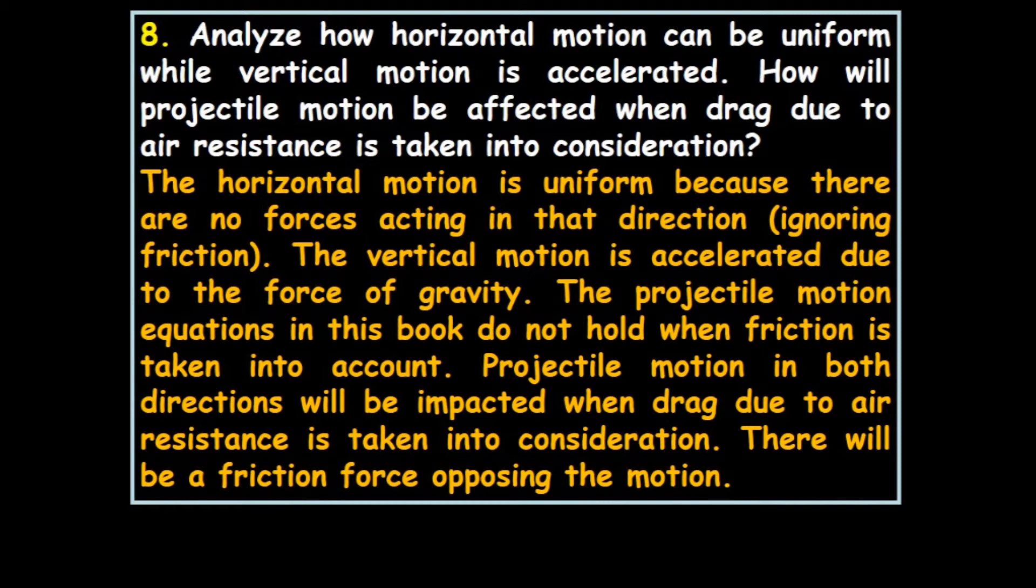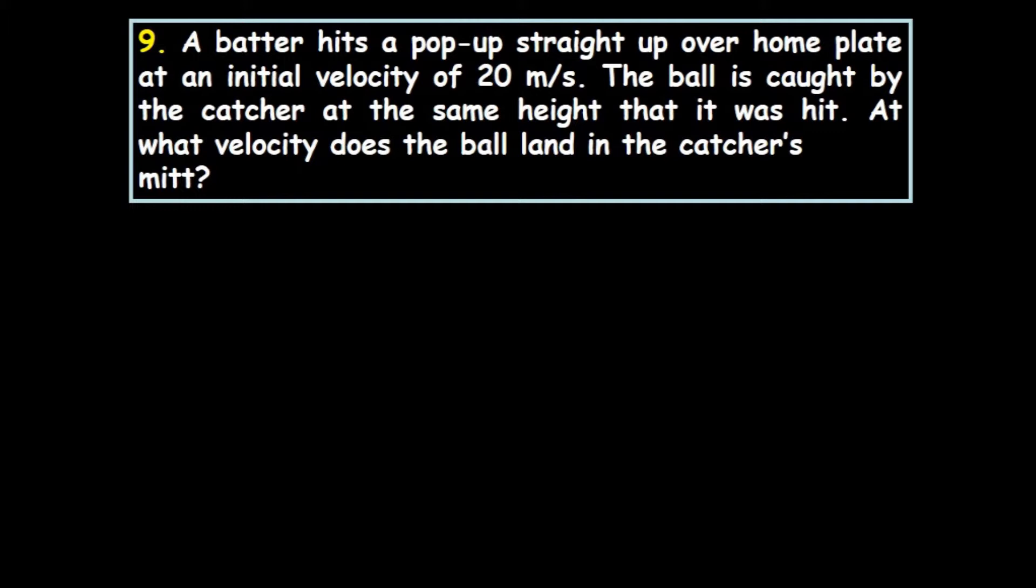A batter hits a pop-up straight up over home plate at initial velocity 20 meters per second. The ball is caught by the catcher at the same height that it was hit. At what velocity does the ball land in the catcher's mitt? The velocity is 20 meters per second, where negative sign indicates down.